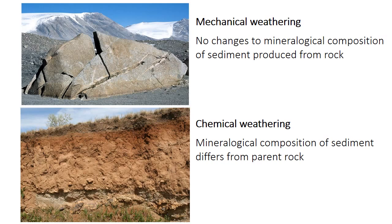Sediment is originally produced by the breakdown of rocks in a process called weathering. Weathering can occur from mechanical processes, such as wind abrasion, water abrasion, or freeze-thaw — the wedging of cracks by freezing and thawing of water. Mechanical weathering will break the rock into smaller fragments, and it may increase the roundness of those fragments, but it doesn't really change the mineralogical composition of the sediment that comes from that rock.